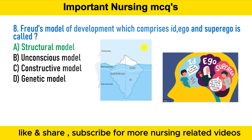Sigmund Freud introduced the structural model — id, ego, superego — in the essay 'Beyond the Pleasure Principle' in 1920, in response to the ambiguity around the term the unconscious mind. He elaborated and formalized that model in the essay 'The Ego and the Id' in 1923. Freud proposed that the mind is divided into three components: id, ego, and superego, and the interactions and conflicts among them create personality.